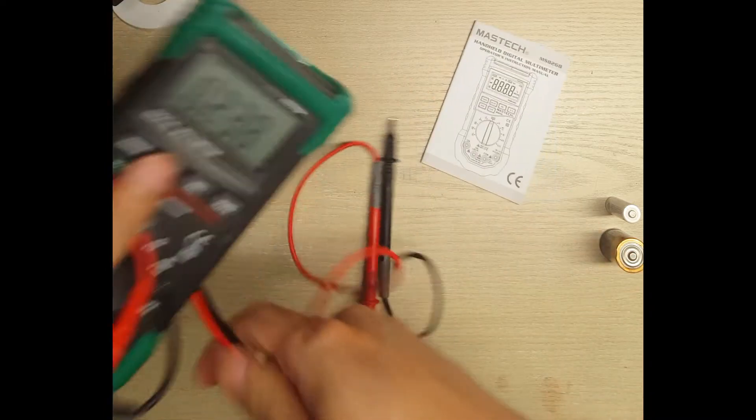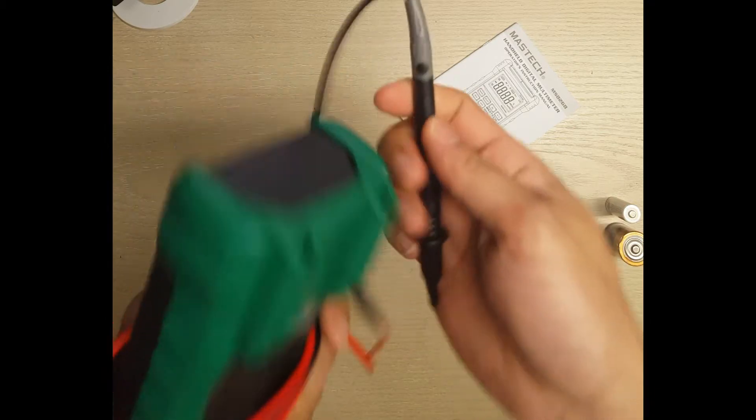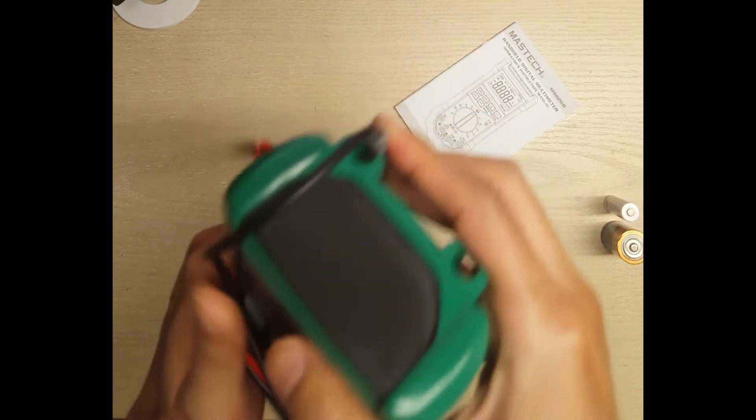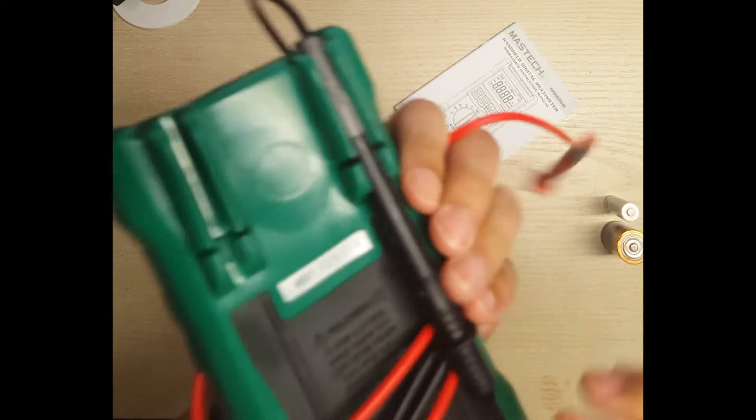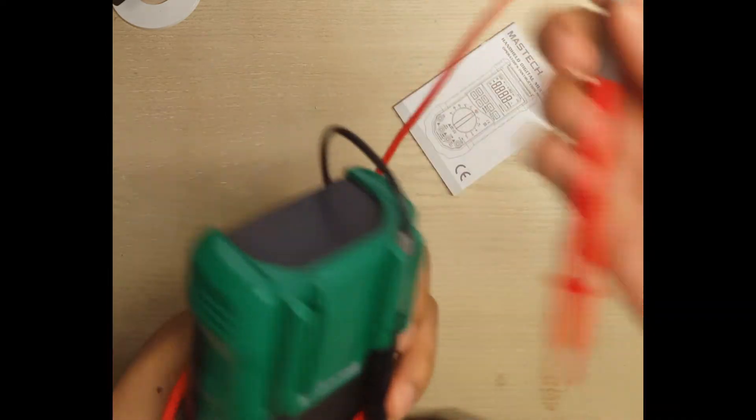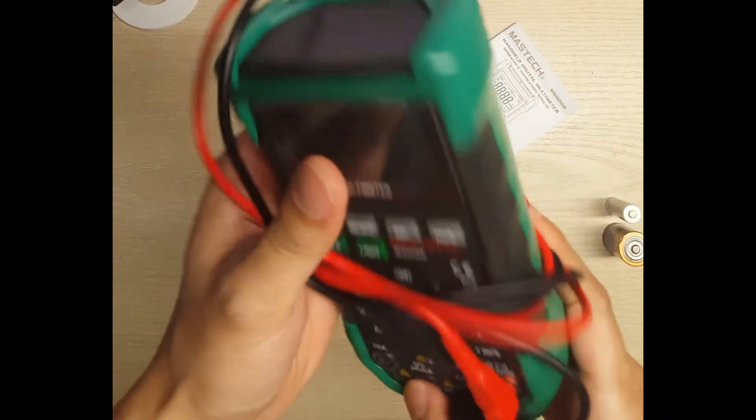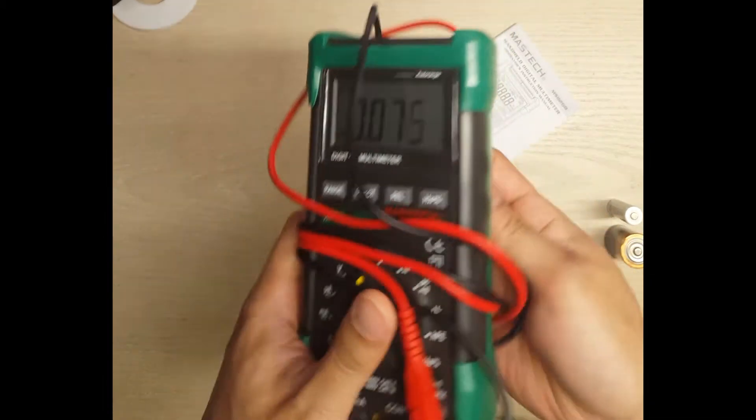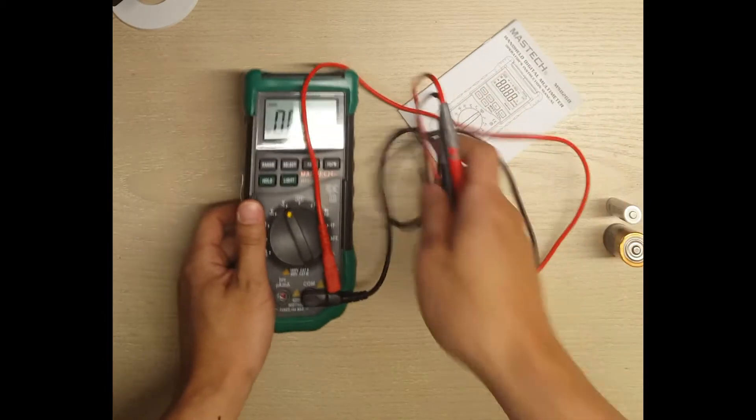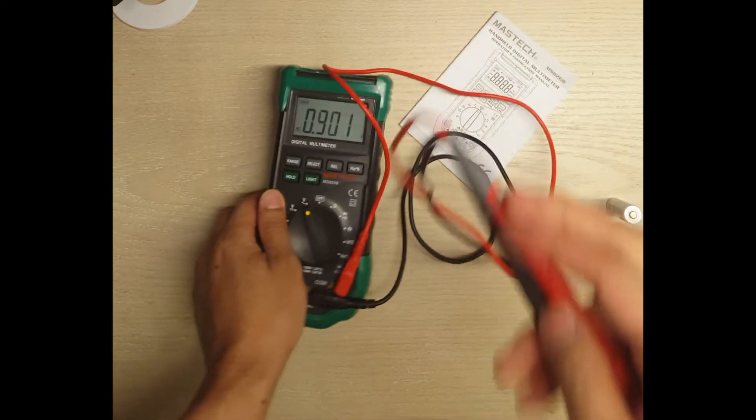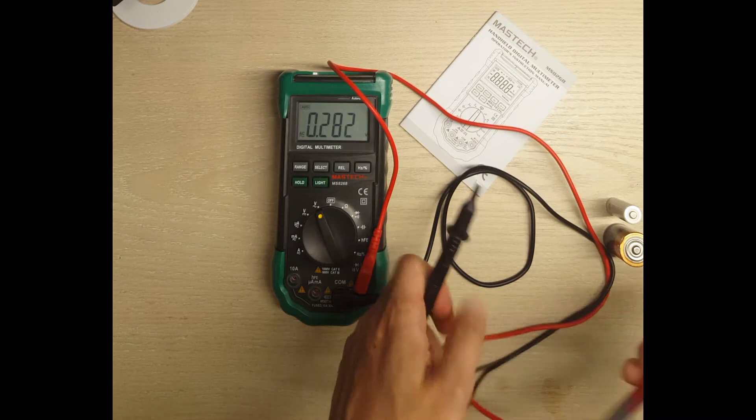It's easy to put away if you wrap it around and then you can actually just pop it into the back here and they'll stay. That makes it easy to put it away without the wires dangling everywhere. I'm going to show you the most common things I use it for: testing voltage and amps.